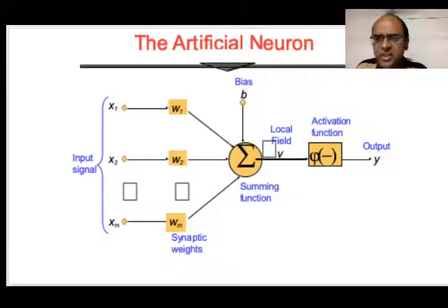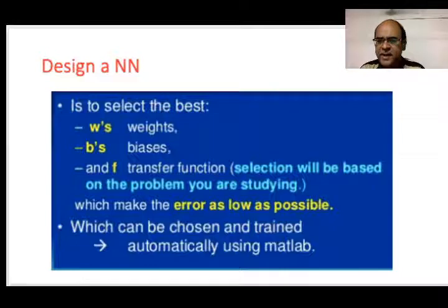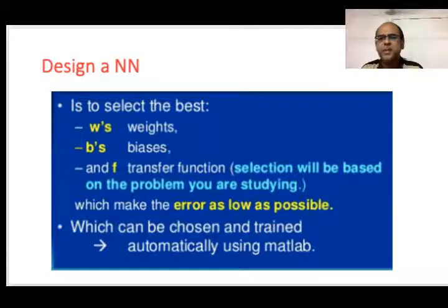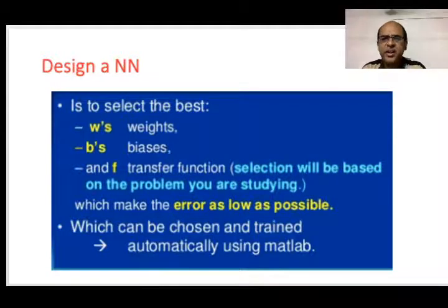The inputs pass into a summing function along with a bias B, then that output passes into an activation function, and finally you get output y. When designing a neural network, you have a set of weights W, a set of biases B, and a transfer function F. The transfer function's basic objective is to make the error as low as possible — you choose weights, biases, and the transfer function, then train and test the network.